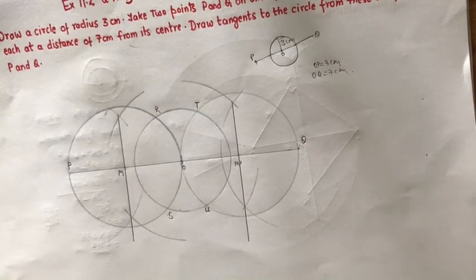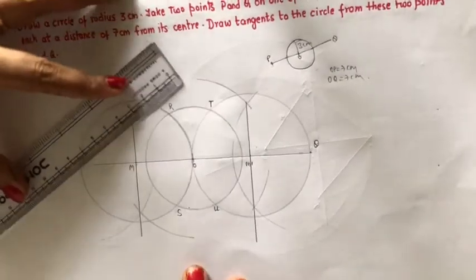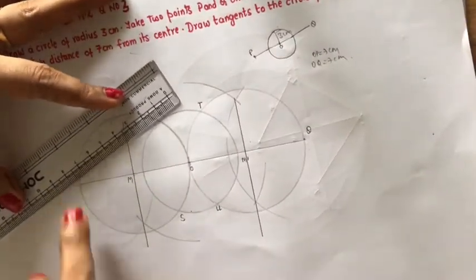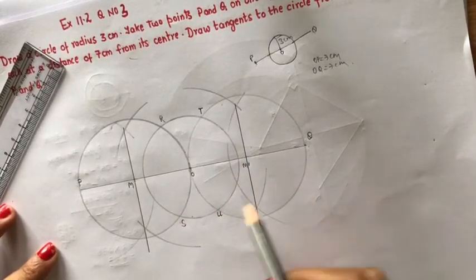Now what is the next step? You have to join PR and PS and QT and QU, QT and QU, and that will be your tangents.